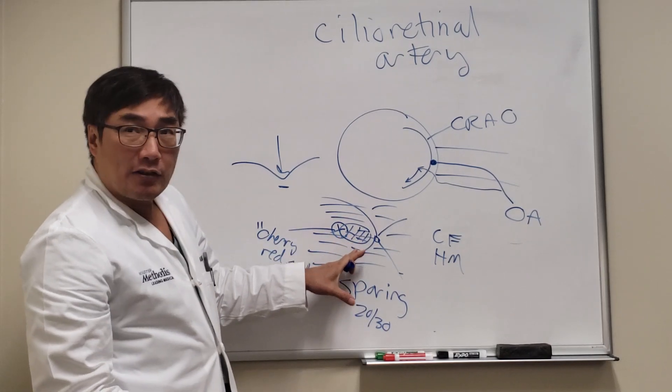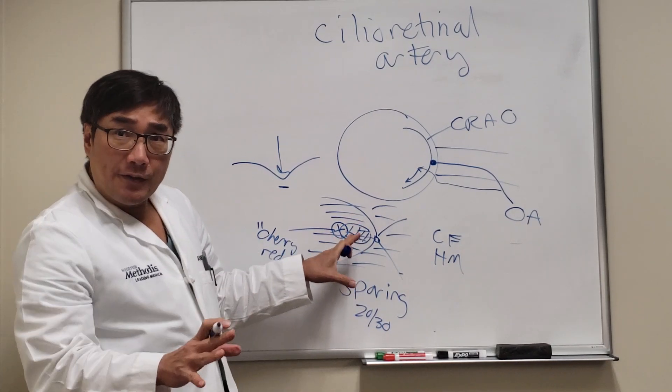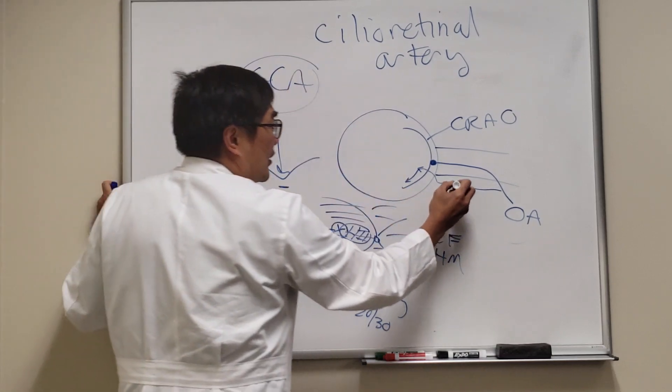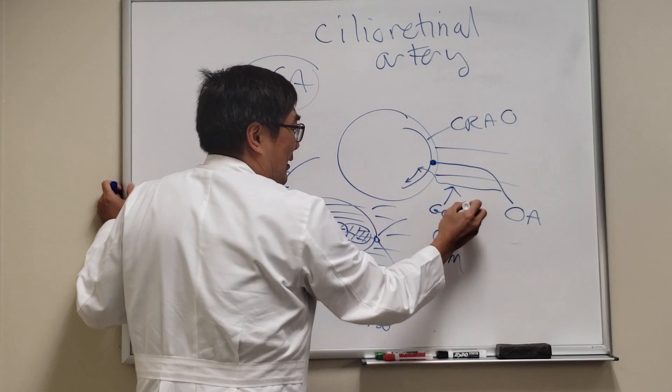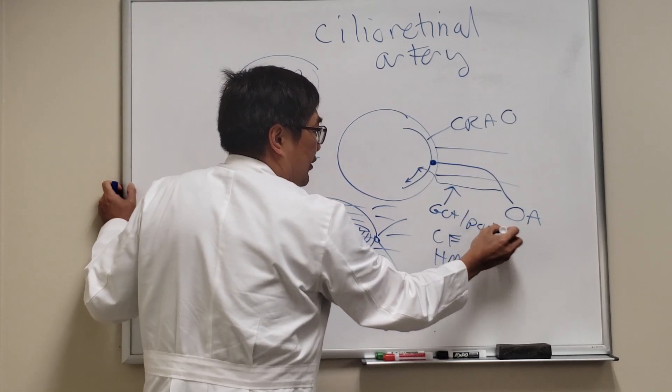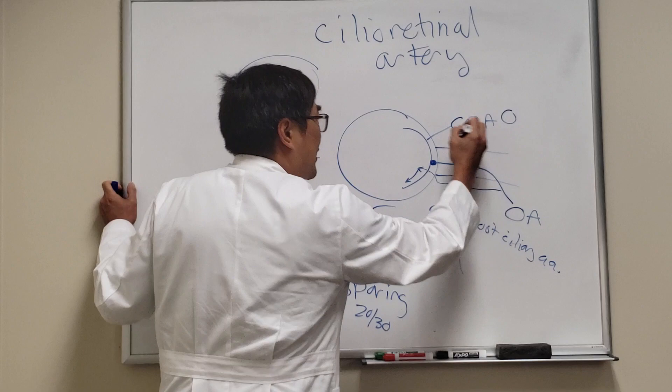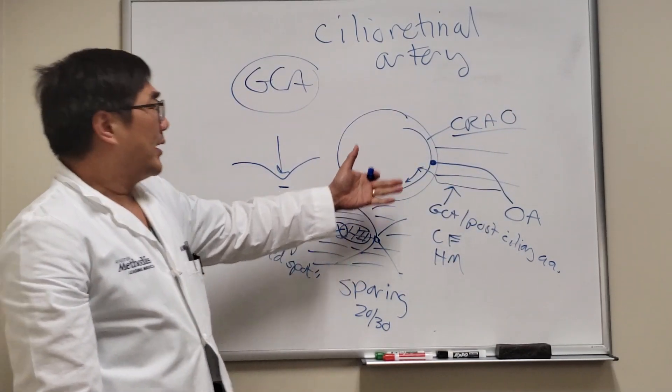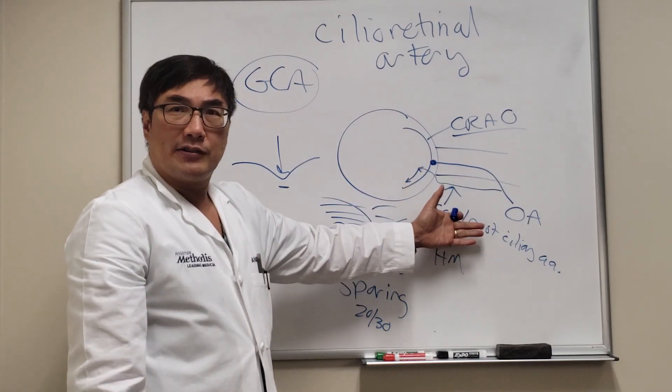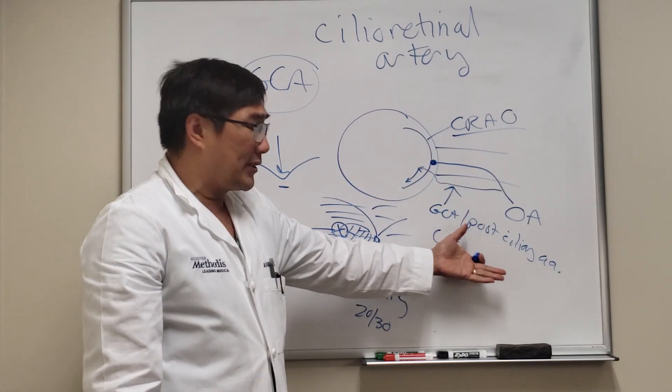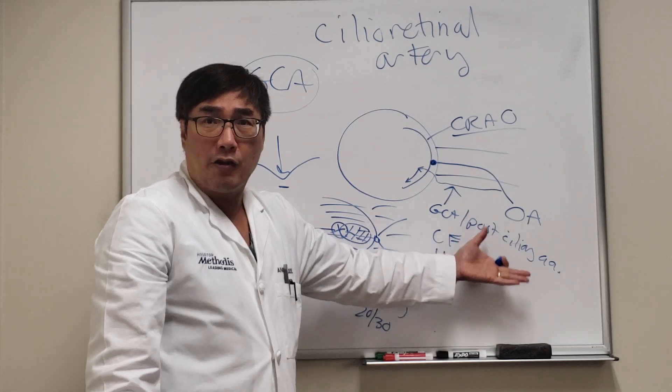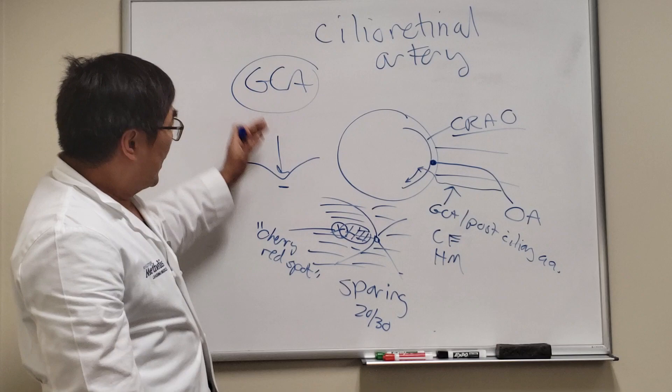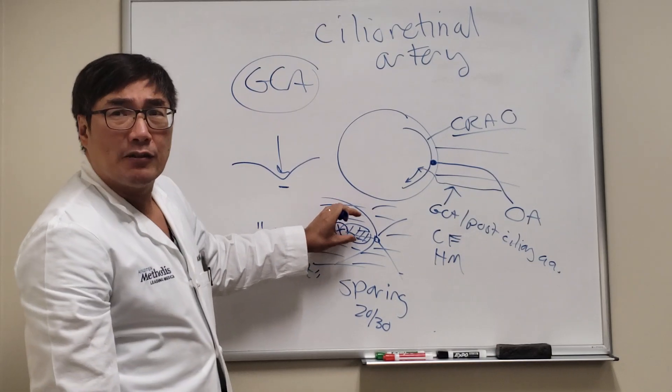If you see a cilioretinal artery occlusion by itself, you should really be thinking about vasculitis—giant cell arteritis—because giant cell arteritis has a predilection for these posterior ciliary arteries. But a central retinal artery occlusion without an embolus is also a sign of giant cell arteritis. So CRAO with or without cilioretinal artery sparing, or cilioretinal artery involvement alone, are giant cell arteritis in elderly patients until proven otherwise. You need to know about this cilioretinal artery.